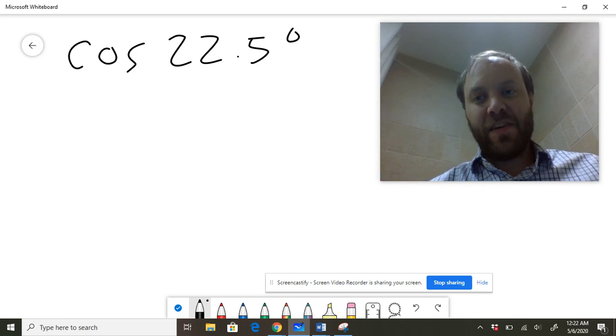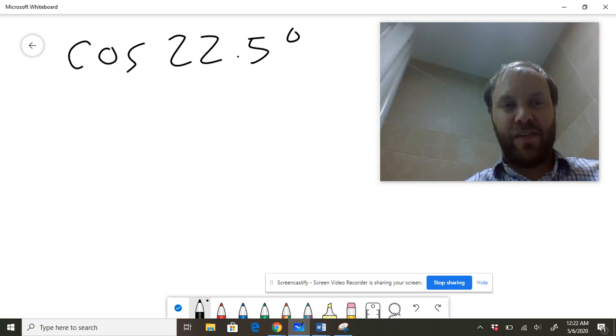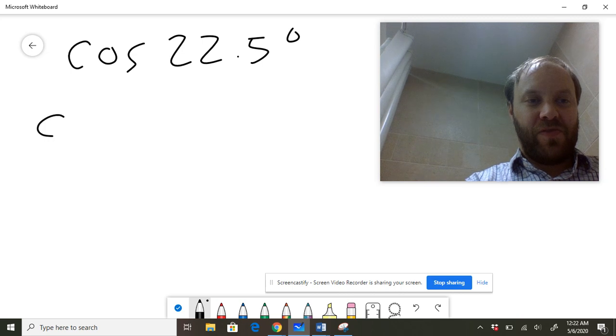So what I'd like to try to do here is come up with a relationship that somehow has half of a 45-degree angle in it. The way I'm going to do this, I'm going to use the cosine double angle identity.